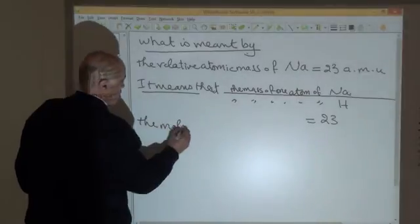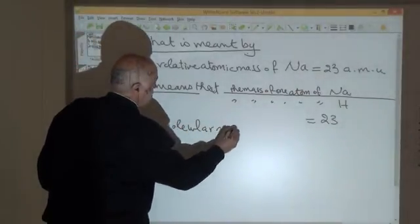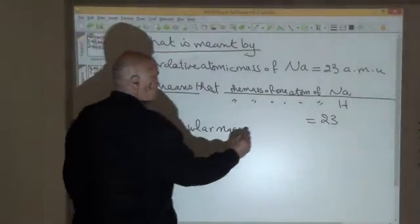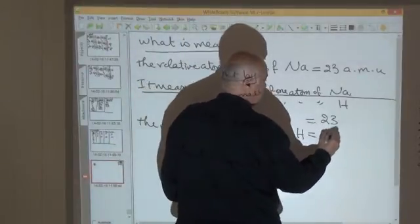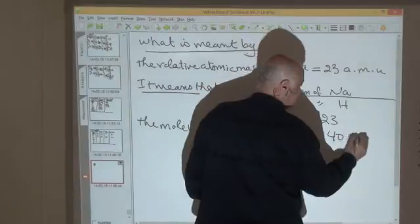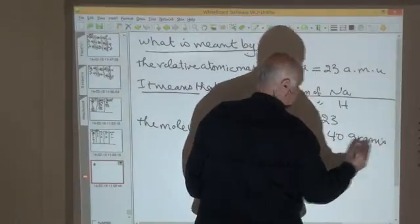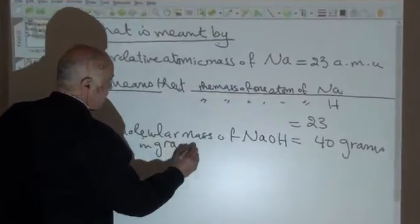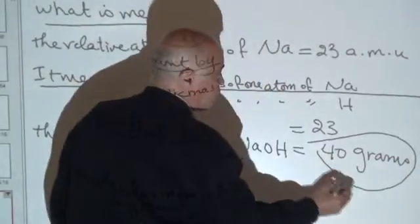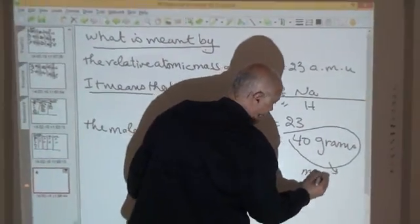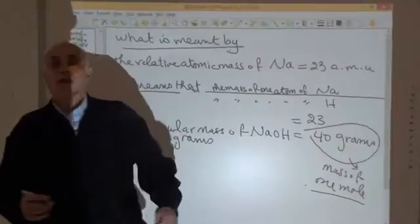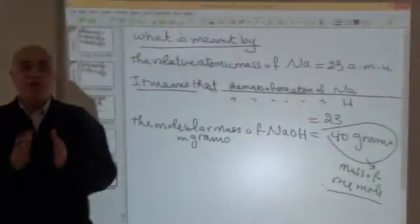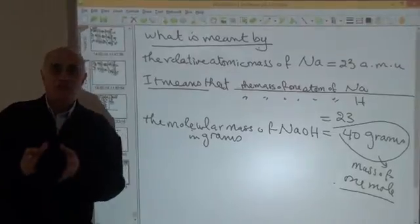What is meant by molecular mass? The molecular mass of sodium hydroxide equals 40 grams per mole. The mole means the molecular or atomic masses expressed in grams.